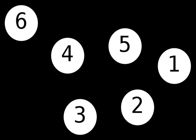A finite graph is a graph in which the vertex set and the edge set are finite sets. Otherwise, it is called an infinite graph. Most commonly in graph theory it is implied that the graphs discussed are finite. If the graphs are infinite, that is usually specifically stated.